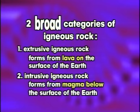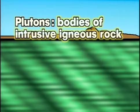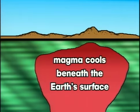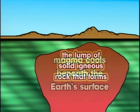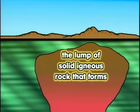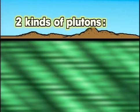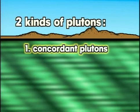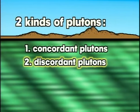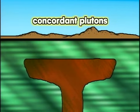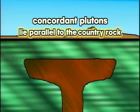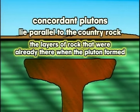Plutons are bodies of intrusive igneous rock that form when magma cools beneath the earth's surface. There are two kinds of plutons: concordant plutons and discordant plutons. Concordant plutons lie parallel to the country rock — the layers of rock that were already there when the pluton formed.